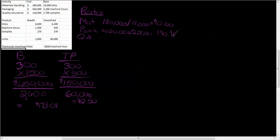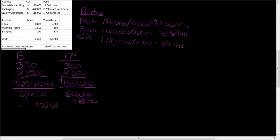So we have $10 per kilo for material handling and $190.91 per machine hour for packaging. For quality assurance, it's $118,000 divided by 1,700 samples, and that equals $69.41 per sample.